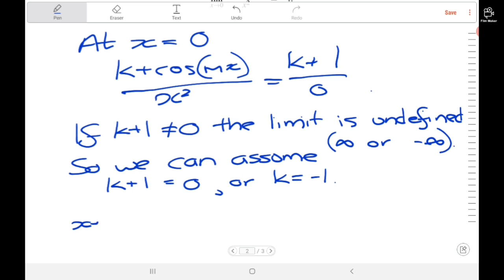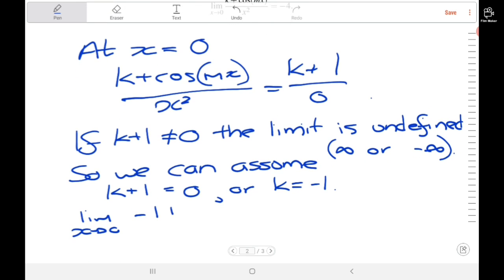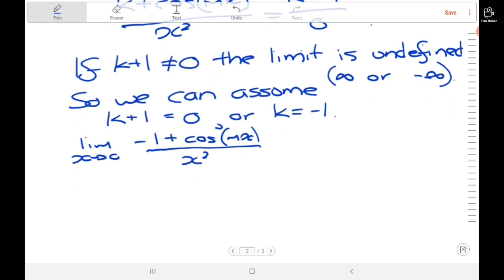Now we have the limit as x goes to 0 of negative 1 plus cosine of mx divided by x squared. This is of the form 0 over 0, so we need to use L'Hopital's rule. L'Hopital's rule says this equals the limit as x goes to 0 of the derivative of the numerator divided by the derivative of the denominator.